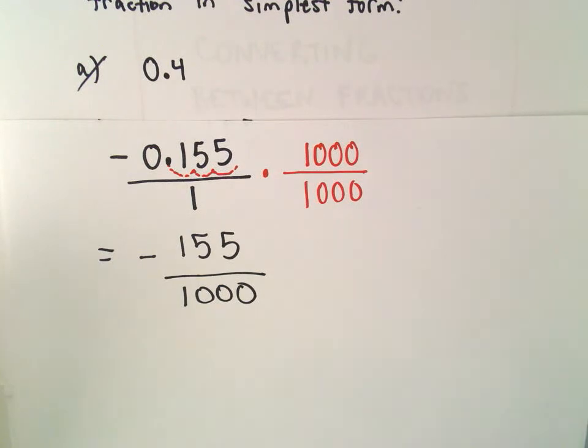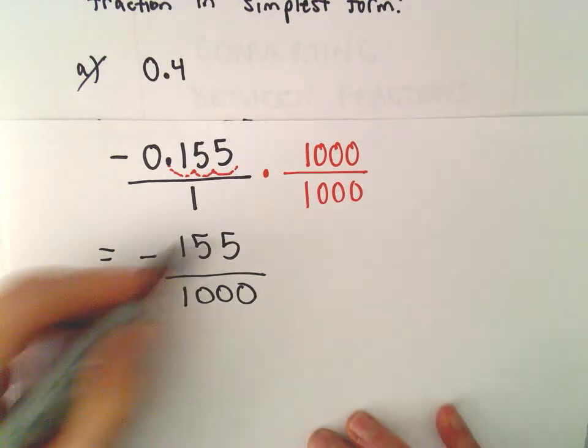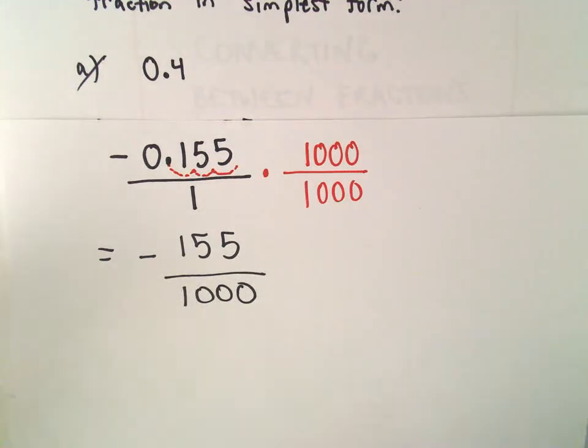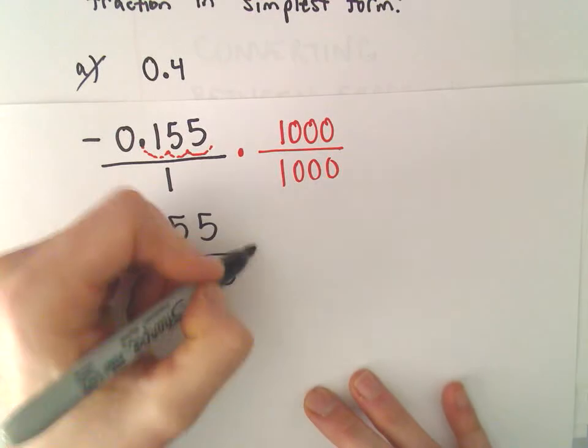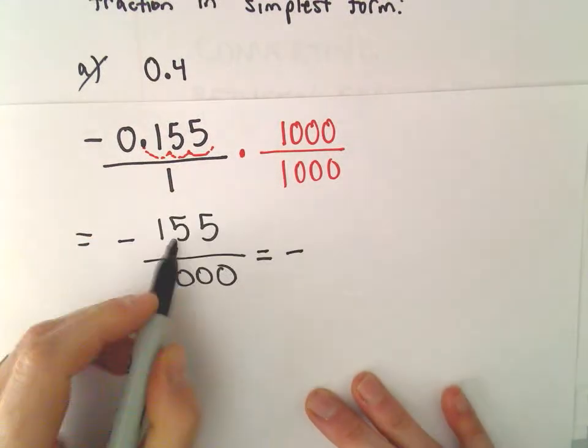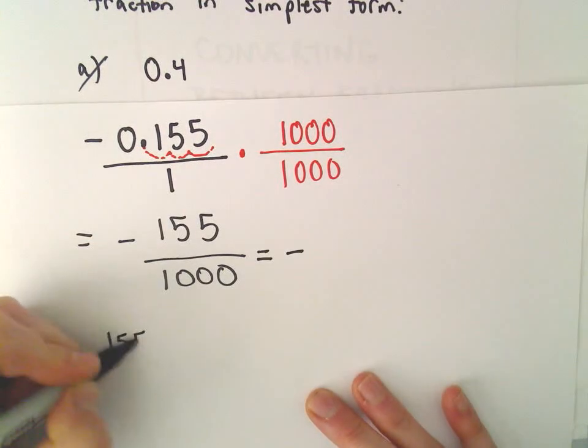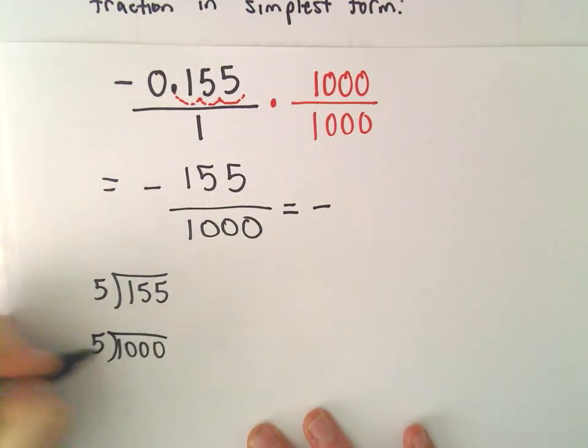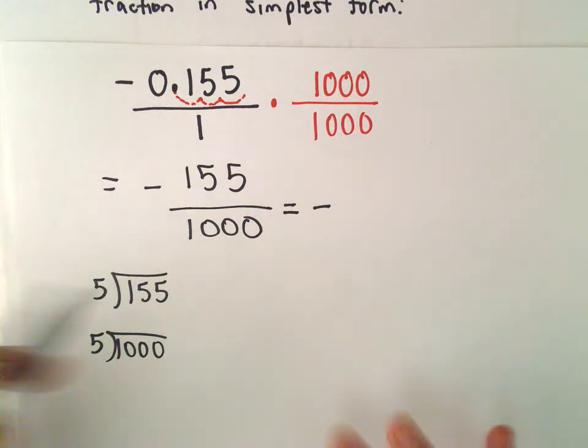And now kind of the fun part, right? We can reduce this because certainly each one of these numbers is at least divisible by 5. Maybe something else as well. So let's see. And you can always do 155 divided by 5 off to the side and 1000 divided by 5 off to the side if you want to see how they reduce.